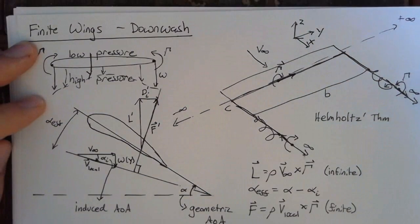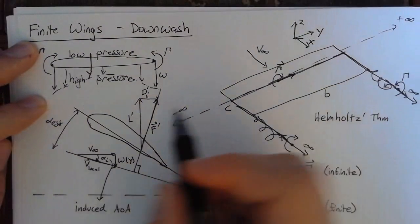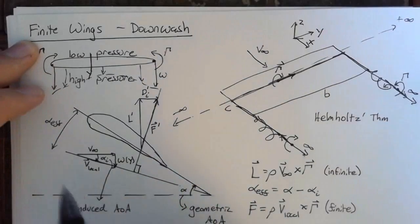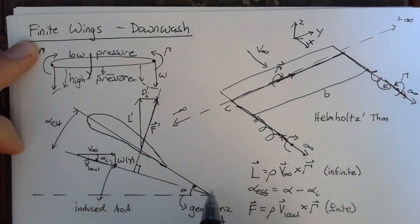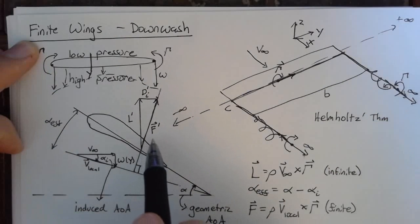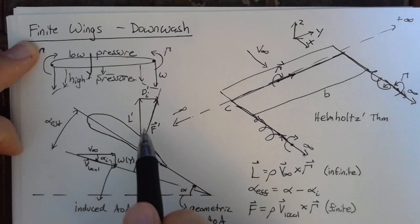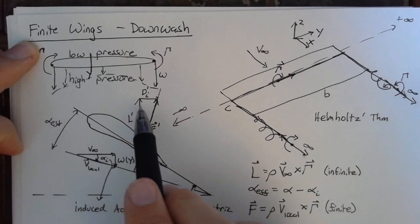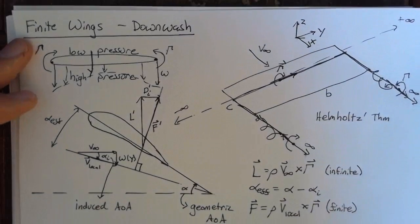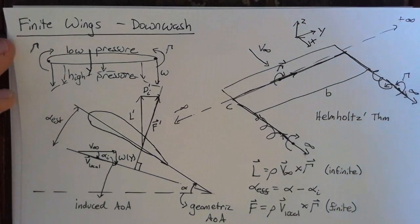So the general effect of the downwash caused by these wingtip vortices is to change the effective angle of attack from the geometric to the effective. And then additionally, we're changing the actual angle of the lift. And this generates some induced drag. So in the next couple of lessons, we'll actually be calculating.